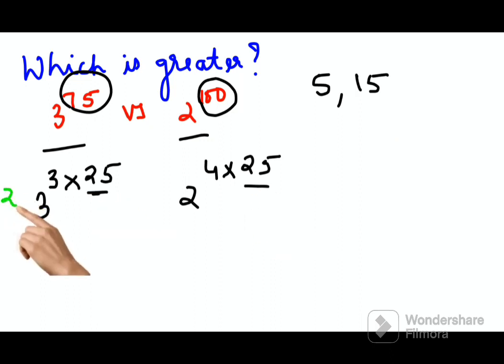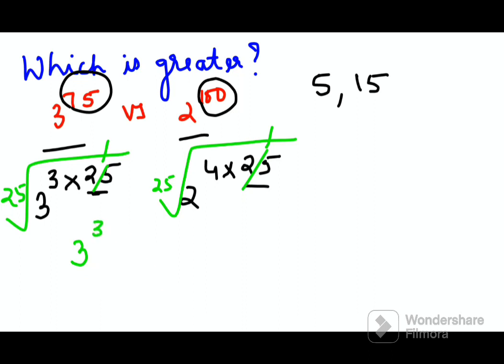In the next step, I can take the 25th root on both the sides. So what happens? This 25th power and the root, and the 25th power and the root gets cancelled. I'm just left with what? 3 raised to 3 and 2 raised to 4. It becomes so much easier, right?